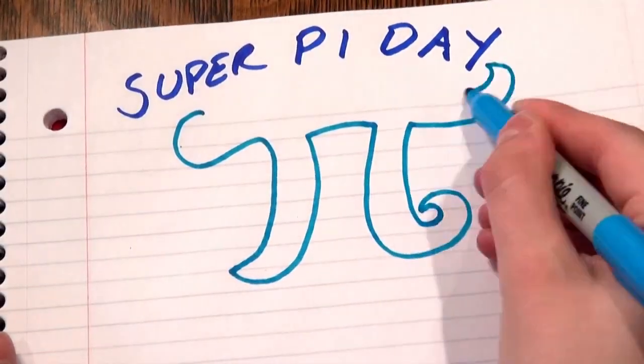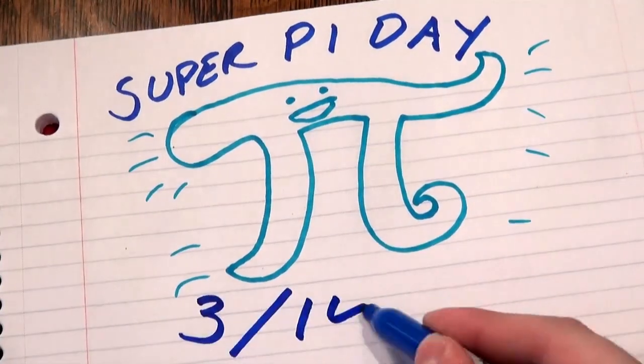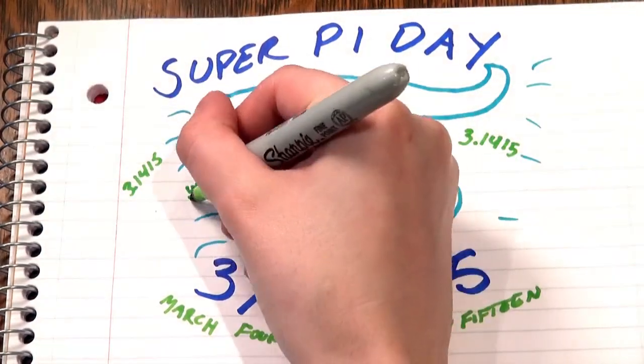So fine, last year's Pi Day was 31415. That's five entire digits of Pi, which of course only happens once a century, so I can understand people being excited.